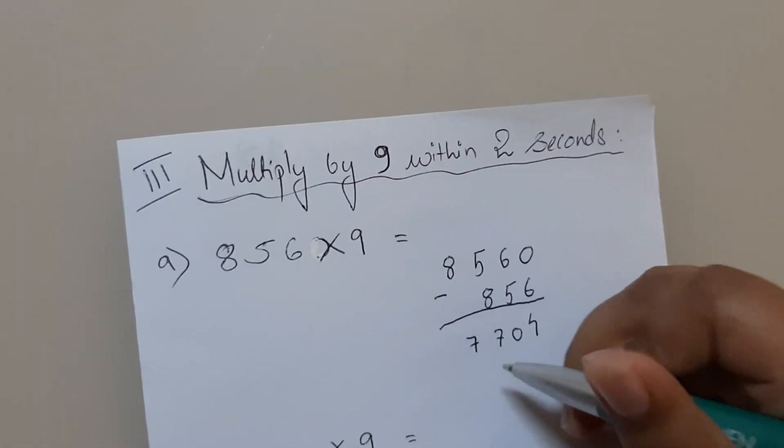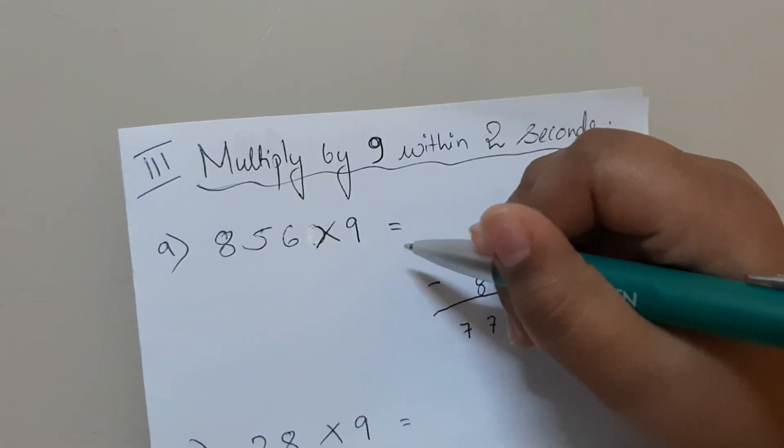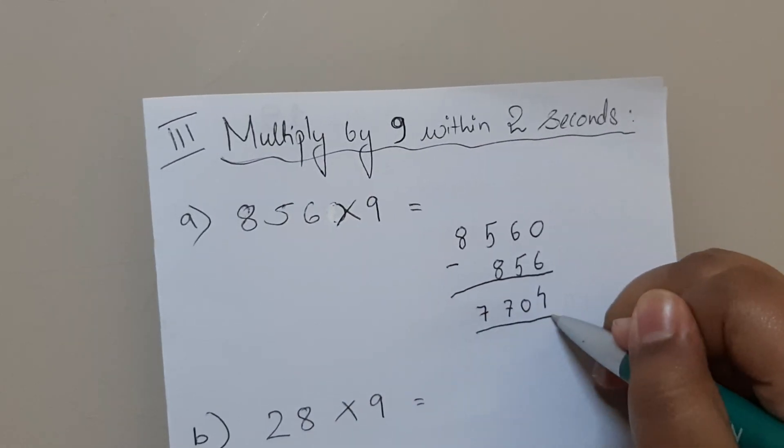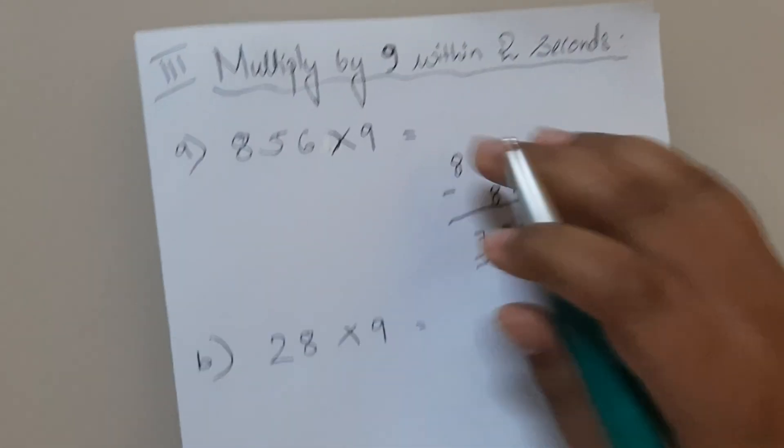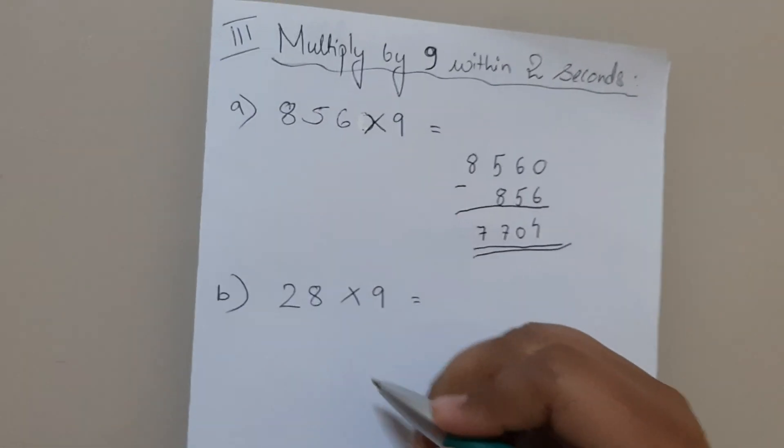So the answer for 856×9 is 7704. Next sum is 28×9.